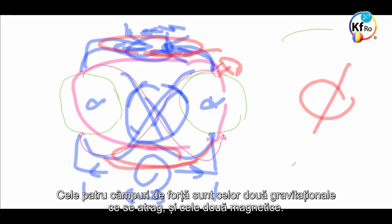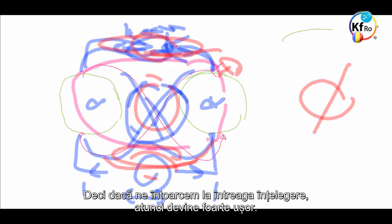The four Field forces are the Gravitational, the two of each, which they pull in, and the two Magnetical. So, if we go back on the whole understanding, so it becomes very easy.